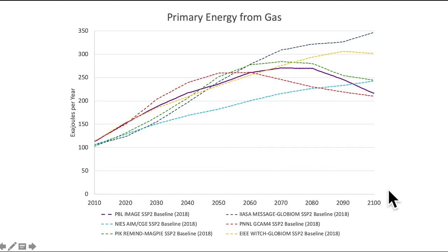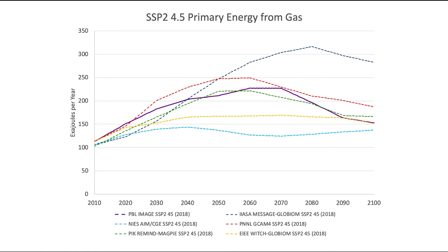You can explore another scenario called 4.5 — that is the radiative forcing level of 4.5 watts per meter squared, which corresponds to about 2.6 degrees Celsius by the end of the century. So it doesn't get to two degrees but gets much of the way there.